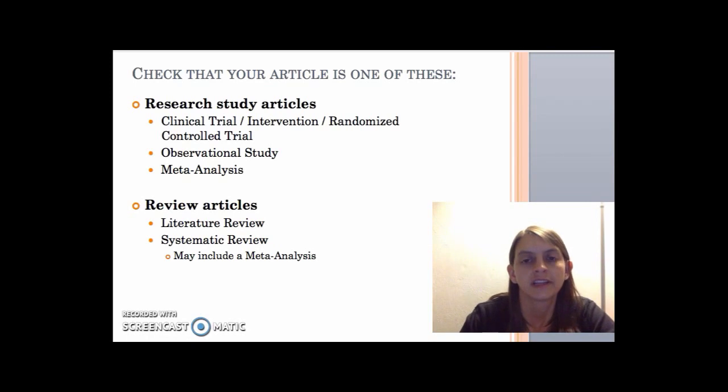So research articles can be called a number of more specific things. If they're reporting on a study, that study might be one of different types. So it might be called a clinical trial or an intervention. It may be called a randomized controlled trial. It might be called an observational study or a meta-analysis.